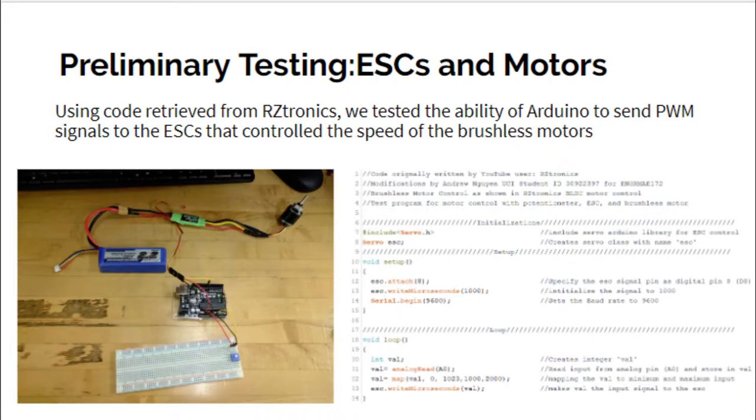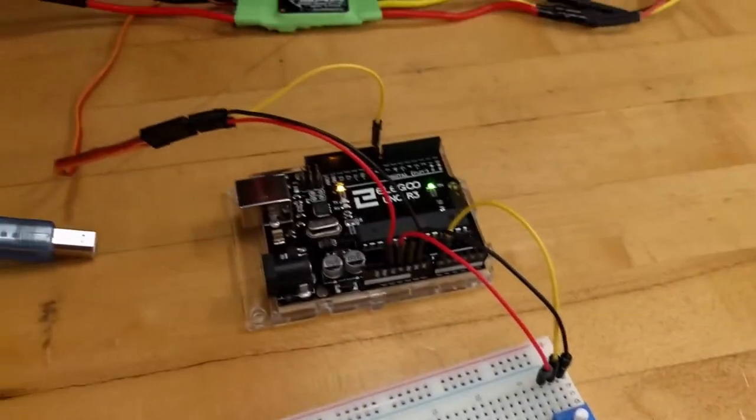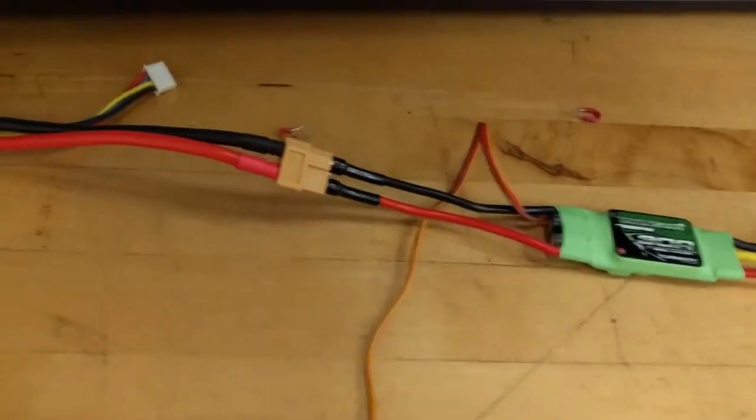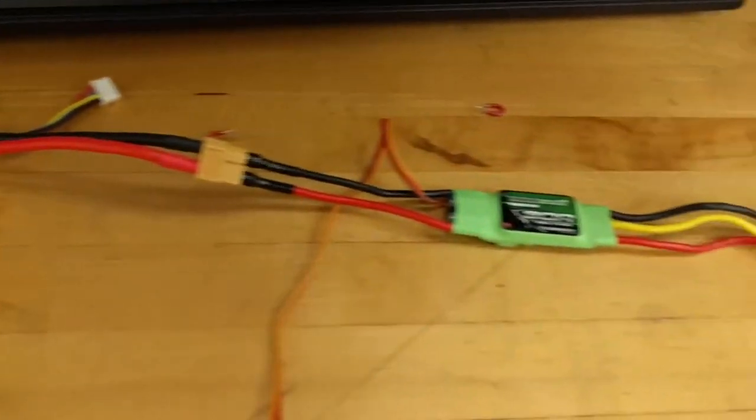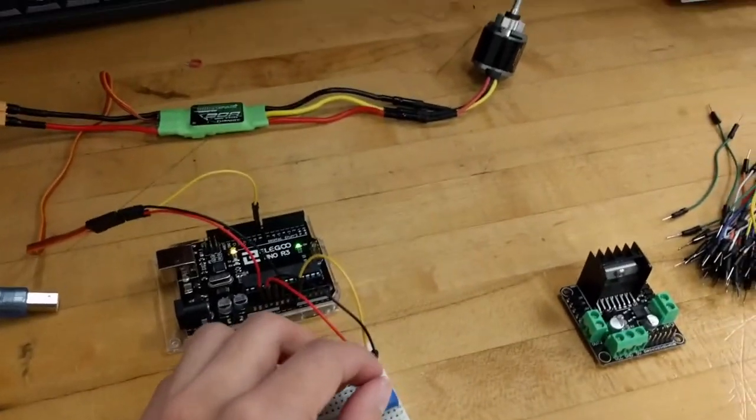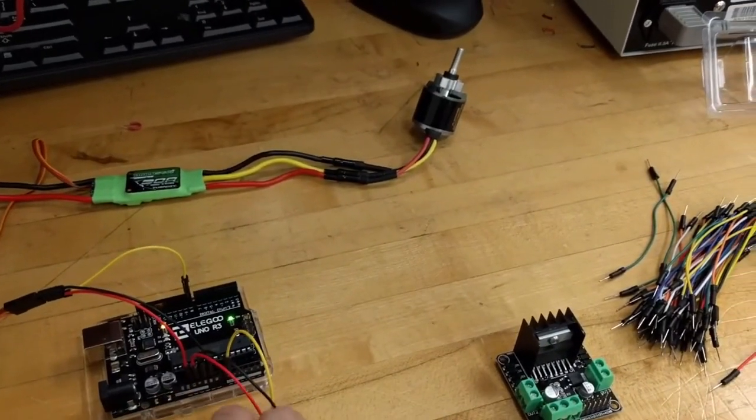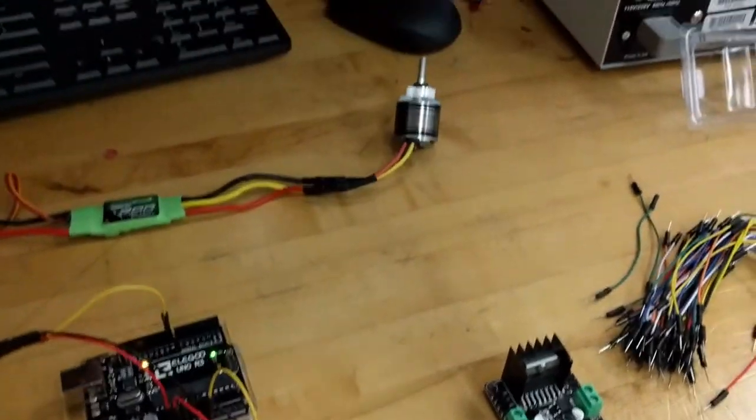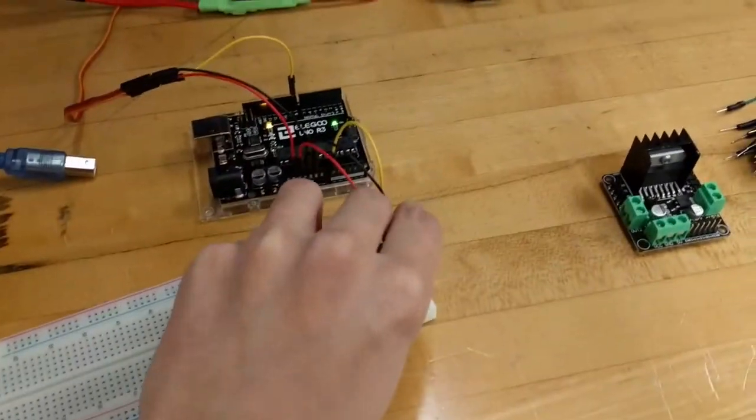We did a few preliminary tests to slowly add functionality to the robot. The first test was attempting to control the brushless motors with the ESCs. We weren't sure what PWM signal was going to yield an ideal launch for the ball. So we used a potentiometer and the serial monitor to test various ranges of PWM signals sent to the motors.